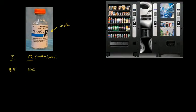Now what happens if the price changes? What happens if the price were to go down — let's say down to $1? Well, they're not going to buy any more insulin. They're going to buy just what they need in order to maintain their diabetes. And remember, we're holding all else equal — we're not assuming any change in expectations of price. So in this case, they'll still just buy 100 vials.